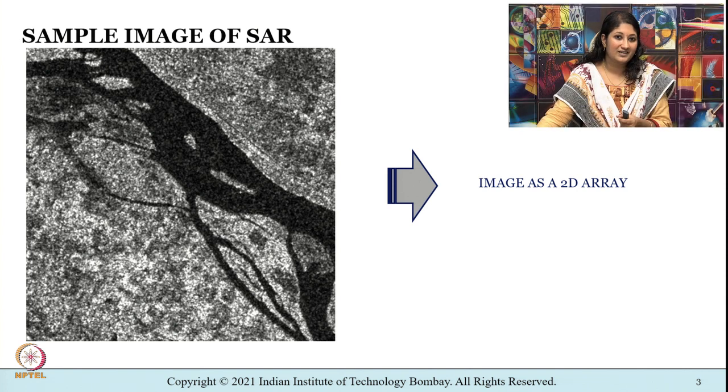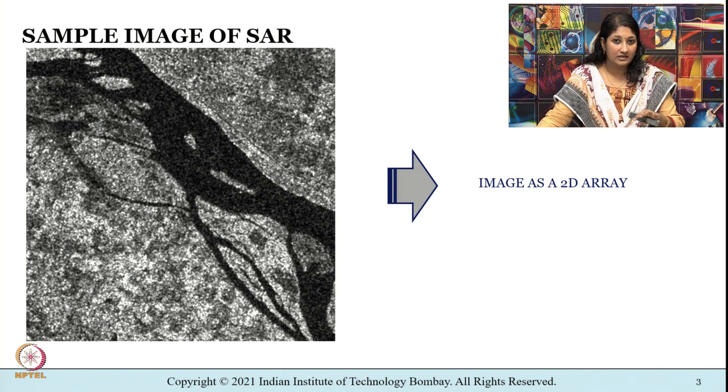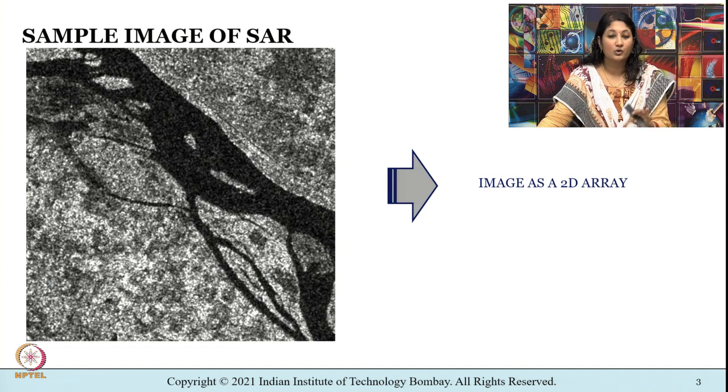Texture is a very important characteristic used to identify objects or areas of interest within an image, whether it be your own photograph or a satellite image. Today's class will answer the question: does texture exist in synthetic aperture radar imagery? If so, how do we quantify it, and where do we use image texture? What you see in front of you is a sample SAR image — I want you to focus on whether this image has any texture.